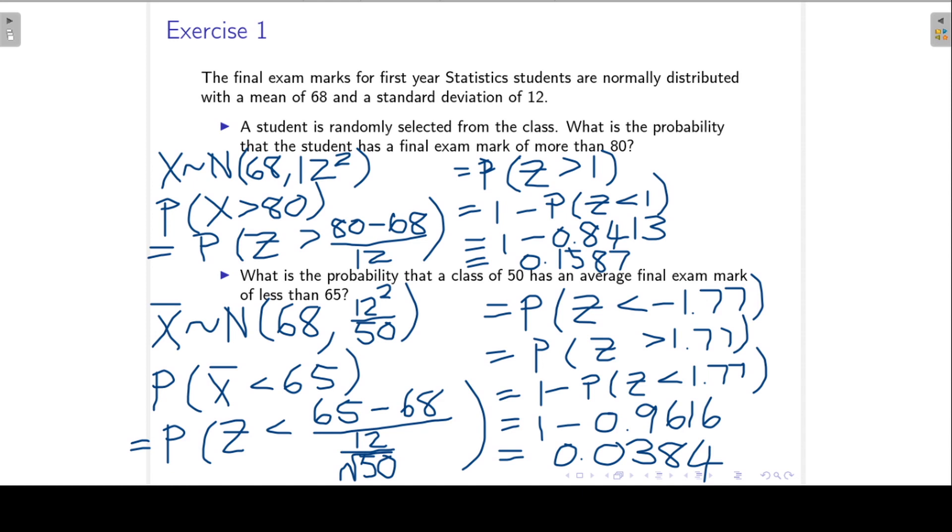A few things I want to point out again. You have to distinguish between the distribution of X and the distribution of X bar. They have the same means, but the variance for X bar is equal to the population variance divided by the sample size.